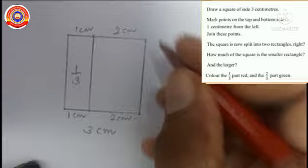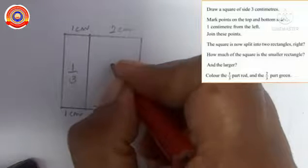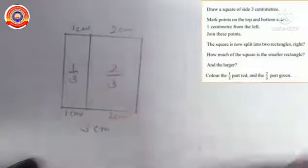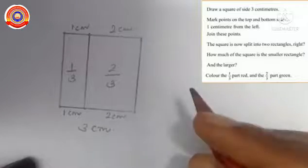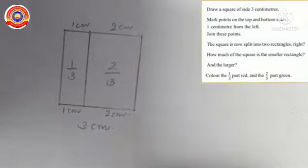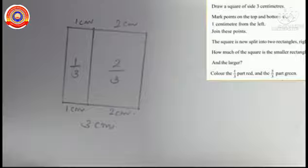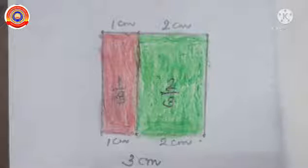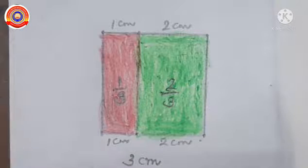Then how much of the square is the larger rectangle? The length of this square is 3 cm. Out of these 3 cm, the larger rectangle is of length 2 cm. So, the larger rectangle is 2/3 part of the square. Next, color that 1/3 part red and the 2/3 part green. We can color like this. Did you understand this activity?